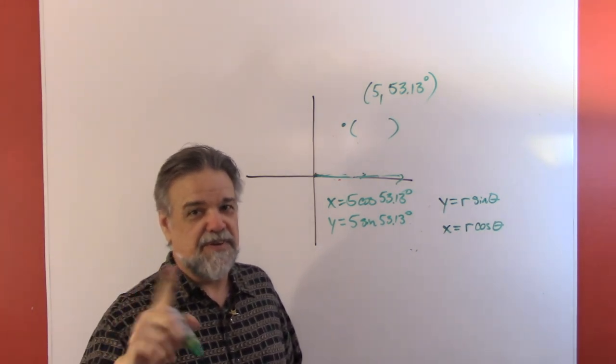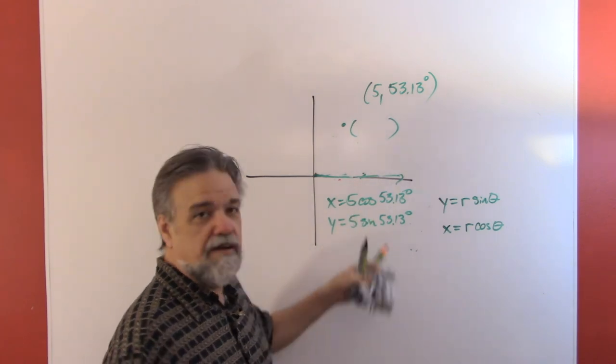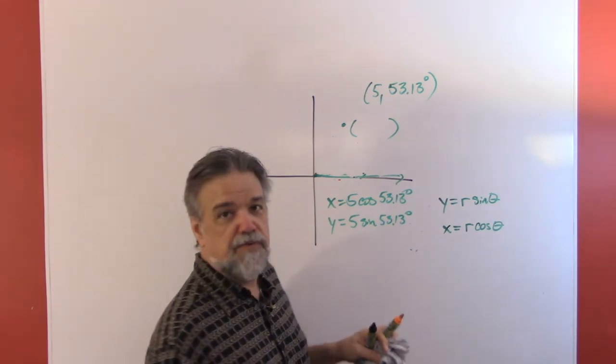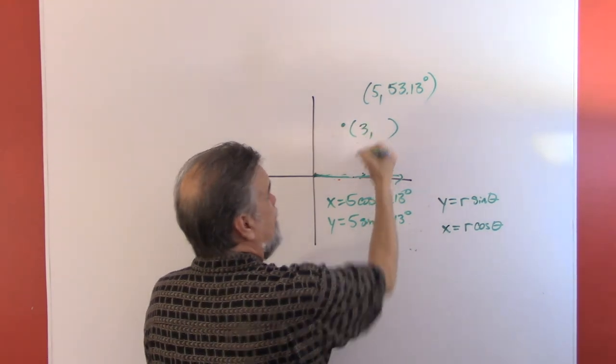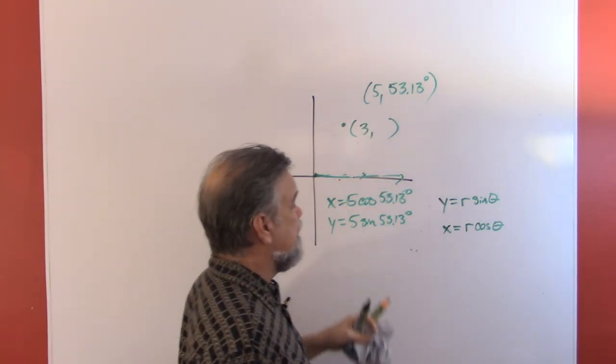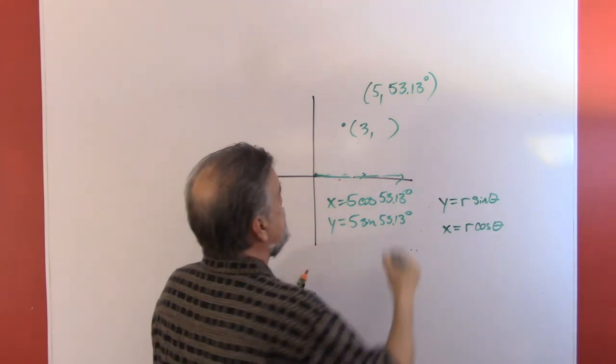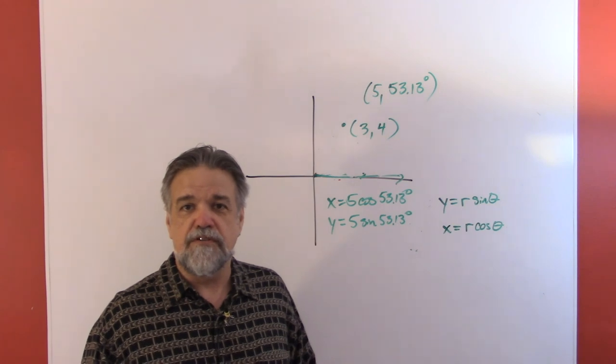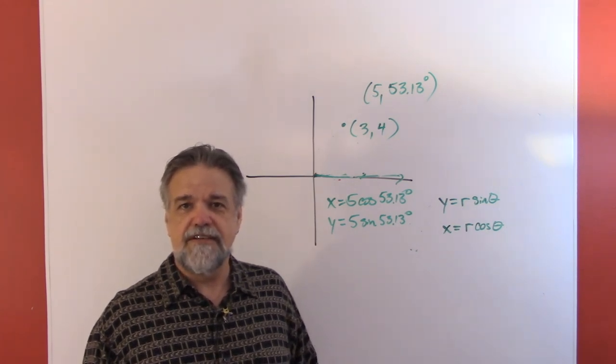Grab your handy dandy calculator, pop in those two—make sure you're in degree mode, don't get in radian mode—and do those two equations there. What you will find is that 5 times the cosine of 53.13 is about 3, and 5 times the sine of 53.13 is about 4. And those are my rectangular coordinates. Man, that was easy. Let's do another one.